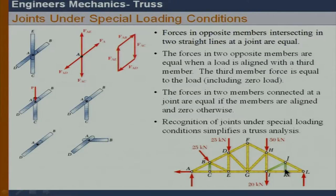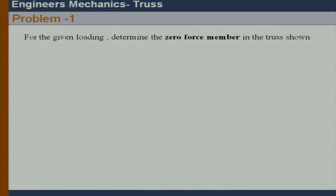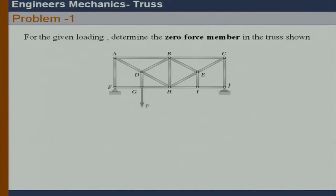From the exercise: JI equals zero, zero, zero. We are applying the special conditions to identify zero-force members by visual inspection. With that, we take a small problem to identify the zero-force members in a truss.